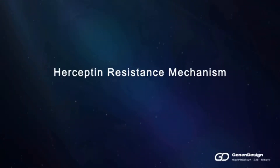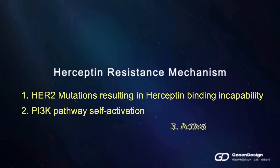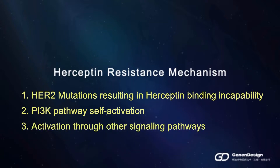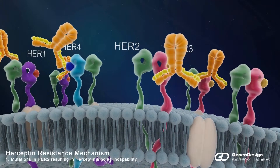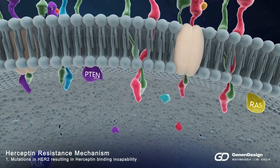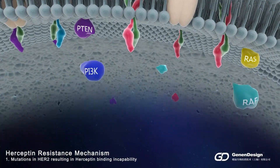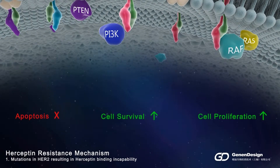Despite the initial effectiveness, tumors in most cancer patients relapse and become resistant to Herceptin after a period of time. Here we show three known mechanisms of Herceptin resistance. First, a truncated HER2 receptor loses its binding site to Herceptin but still keeps its kinase activity. In this case, Herceptin will not be able to block HER2 activity.